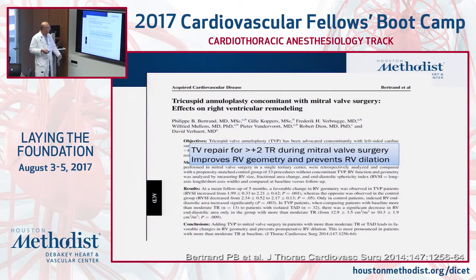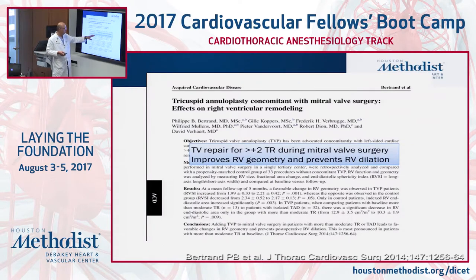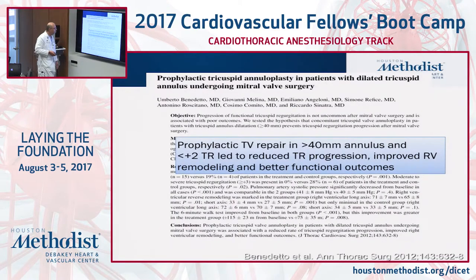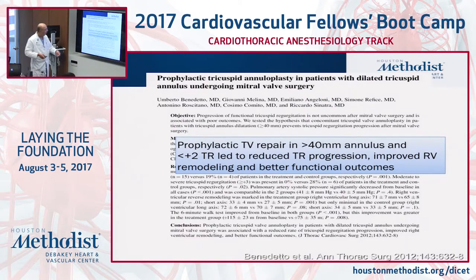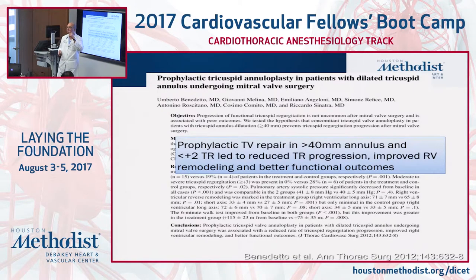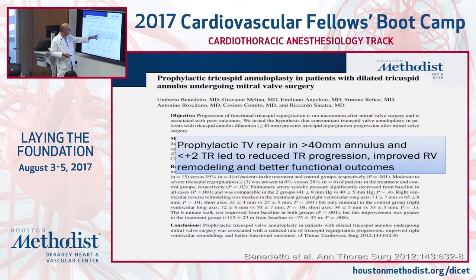If you repair the tricuspid valve for greater than 2+ TR during mitral valve surgery, you will improve RV geometry and prevent RV dilation, which is reflected in the guidelines. Prophylactic tricuspid valve repair is also indicated in patients with an annulus greater than 40 millimeters in diameter even with less than 2+ TR. So a patient coming for left-sided valve surgery with a dilated annulus but only mild tricuspid regurgitation may still meet an indication for repair — leading to reduced TR progression, improved RV remodeling, and better functional outcomes.